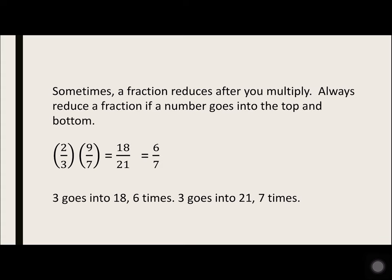Sometimes a fraction reduces after you multiply. Always reduce a fraction if a number goes into the top and bottom. 2 over 3 times 9 over 7: 2 times 9 is 18, 3 times 7 is 21. 3 goes into 18 six times, 3 goes into 21 seven times.